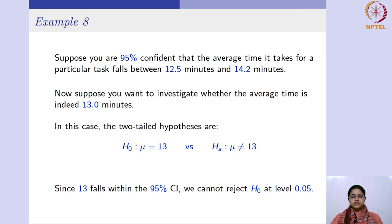This completes week 11. We have seen confidence interval estimation for single-sample problems, focusing primarily on population mean, population variance, and population proportion. In the next and final week, we will learn about two-sample situations, confidence intervals for those cases, and also the bootstrap method for finding confidence intervals.